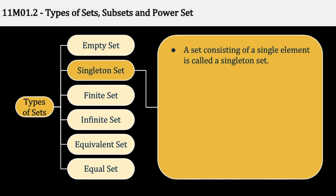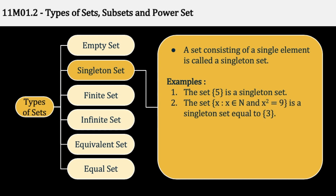Singleton set is any set with a single element. Example: {x : x belongs to N and x² = 9}. Natural numbers में बस 3 ही ऐसा natural number है जिसका square 9 होता है। -3 का भी square 9 होता है, पर वो natural number नहीं है, तो यह singleton set हो गया।